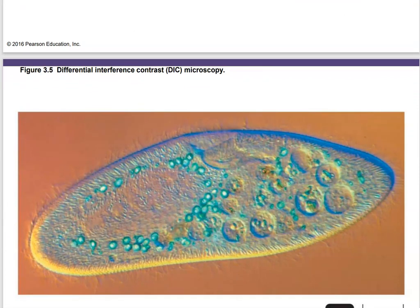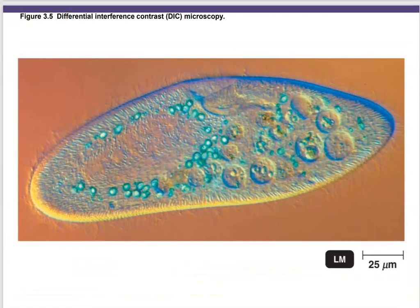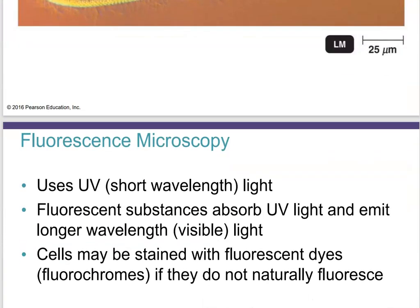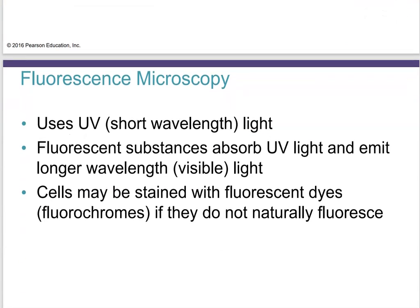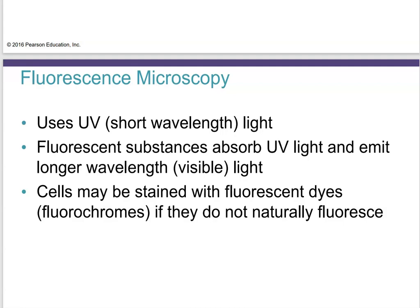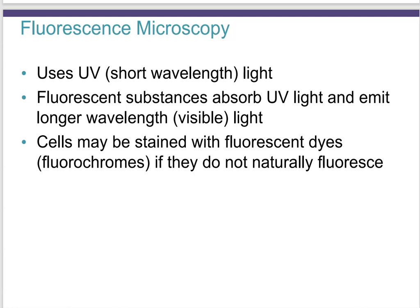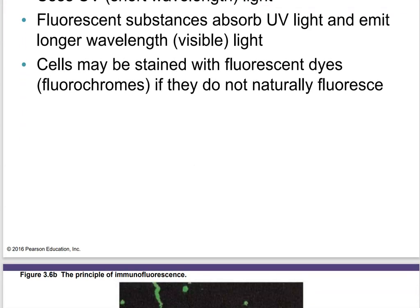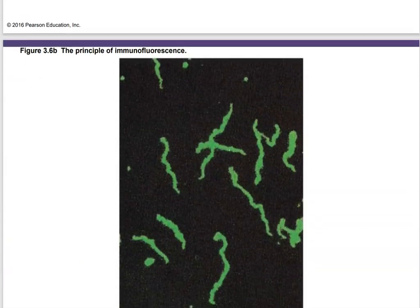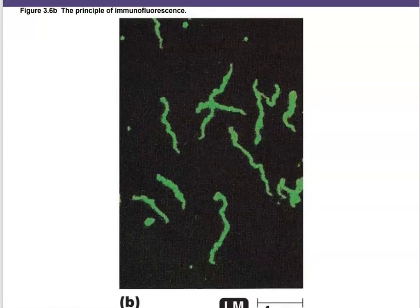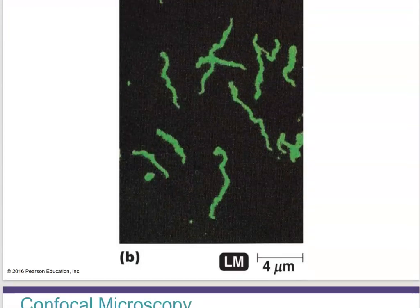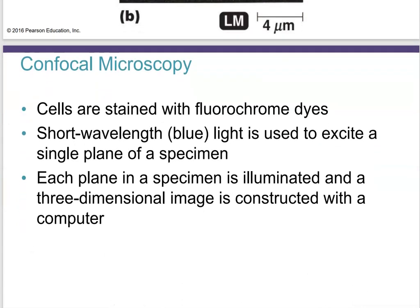Differential interference contrast microscopy is similar to phase contrast — here's an example image. These methods aren't as popular right now. What's really popular is fluorescence microscopy, where chromophores give you different fluorescent colors and you can stain things beautifully. We use a short-wave UV light beam to excite the fluorescent material, which then reflects light at a different wavelength, giving you a fluorescent image. Here is a stained slide using immunofluorescence.